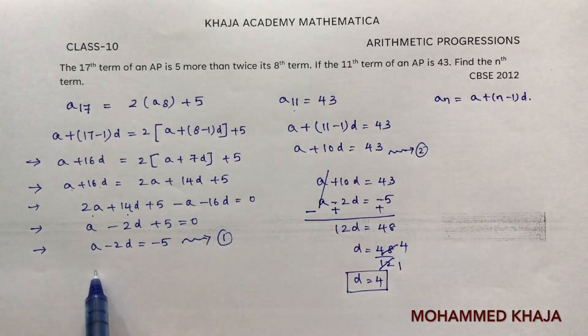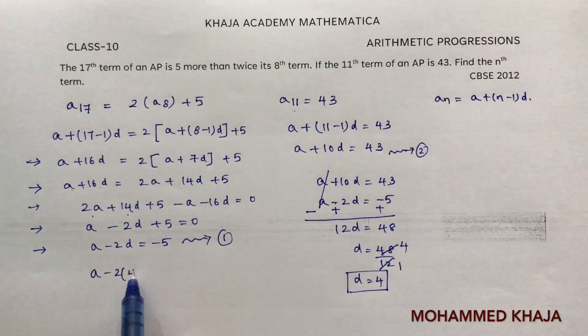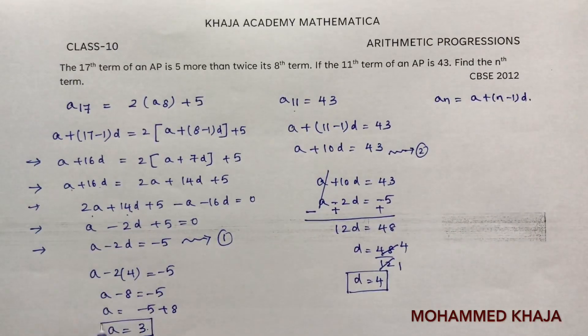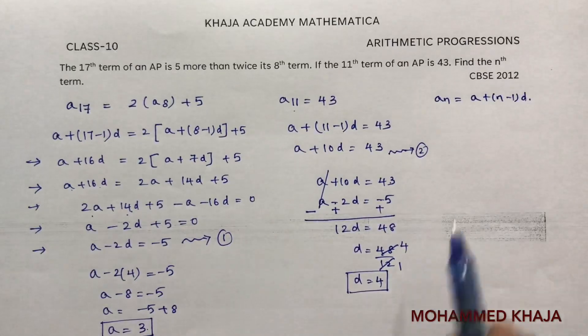Now substitute d value in this equation. a minus 2 into 4 equals minus 5. a minus 8 equals minus 5. If I transpose, a equals minus 5 plus 8, so a equals 3.